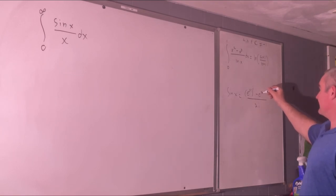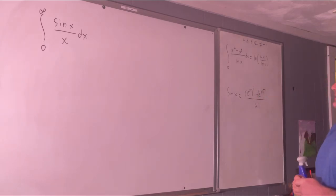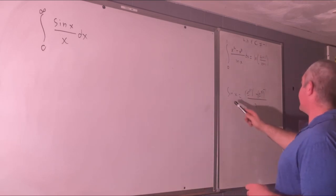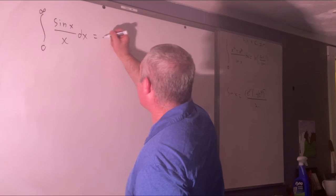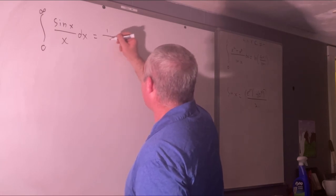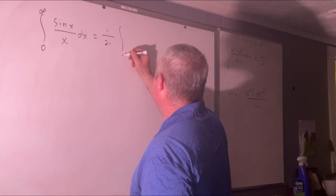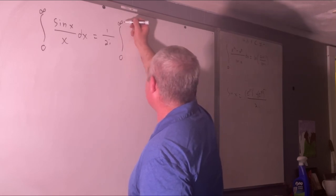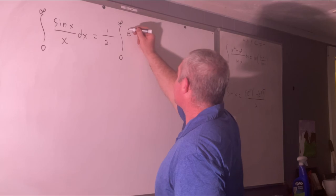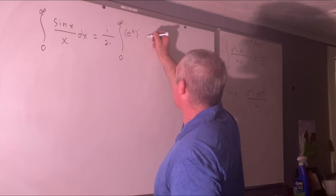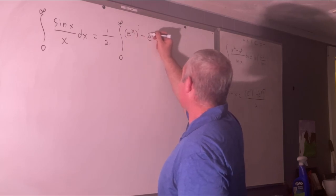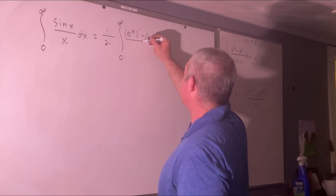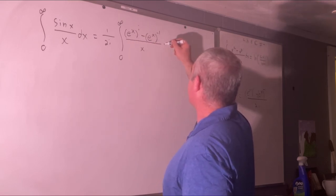Now it might start becoming clear what I'm going to do or how I'm going to use that formula to get the answer. Alright. So using this, we have this is equal to 1 over 2i times the integral from 0 to infinity of e to the x all raised to the i power minus e to the x all raised to the negative i power over x dx.